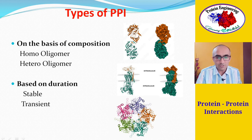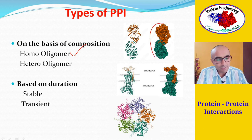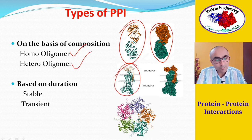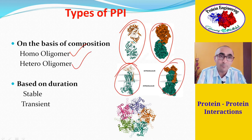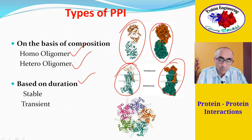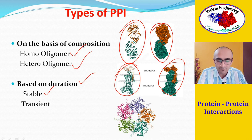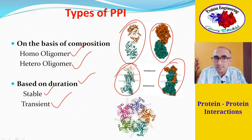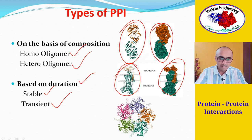Based on composition, protein-protein interaction could produce a homo-oligomer when similar molecules come together, or a hetero-oligomer when different types of proteins associate. Based on duration, PPIs could produce a stable complex that remains stable for a longer time, or it may be transient — a short-lived association. For example, in the case of muscle contraction, the proteins coming together are transiently associated and move apart after a certain period of time.